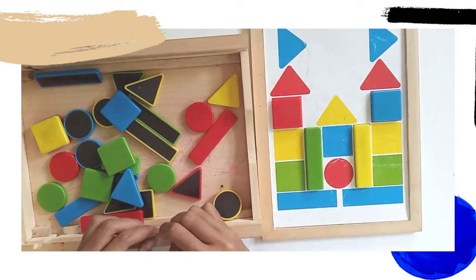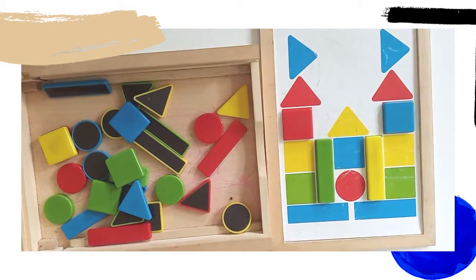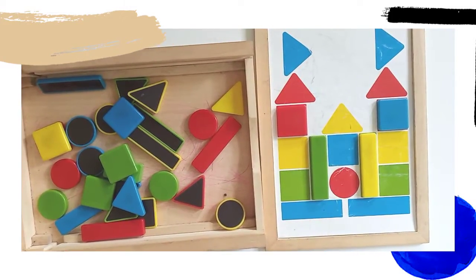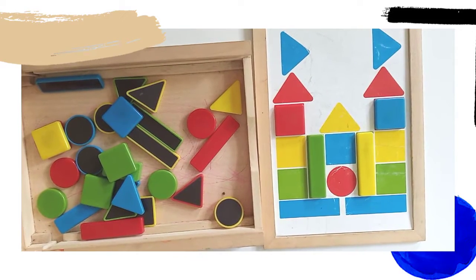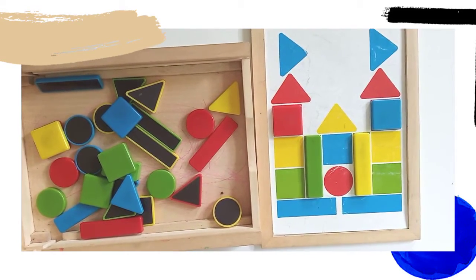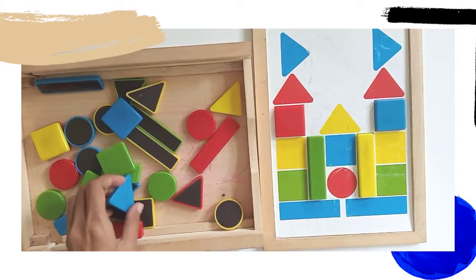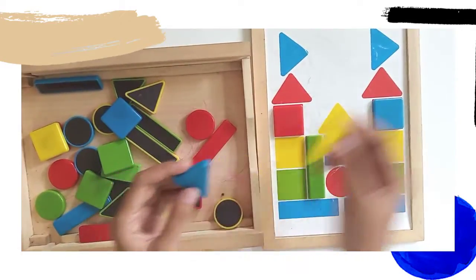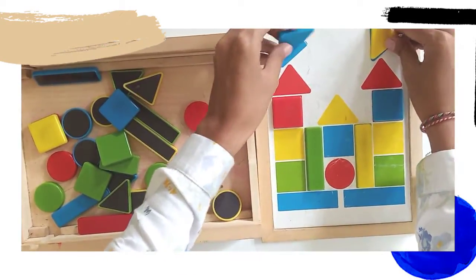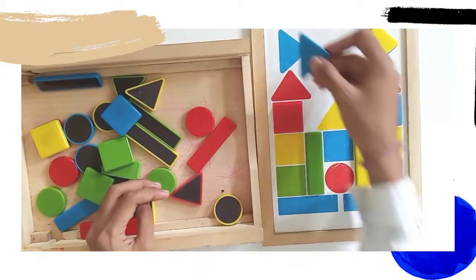Next, let's do the triangle. Can you point out which one is triangle here? Yeah, the blue one and the yellow one. Let's put it here. I want to put this one here.